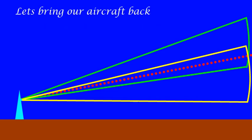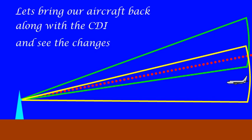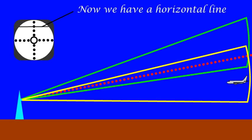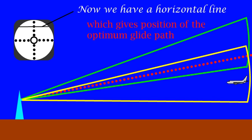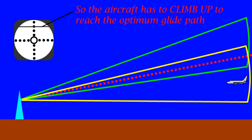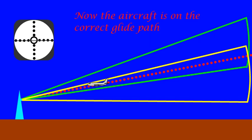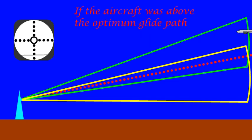If we bring back our aircraft and the CDI, we can see the changes. Now we have a horizontal line on the CDI. So the aircraft needs to climb up to reach the optimum glide path. If the aircraft was above the optimum glide path, indication would be like this. So the aircraft needs to descend to reach the optimum glide path.